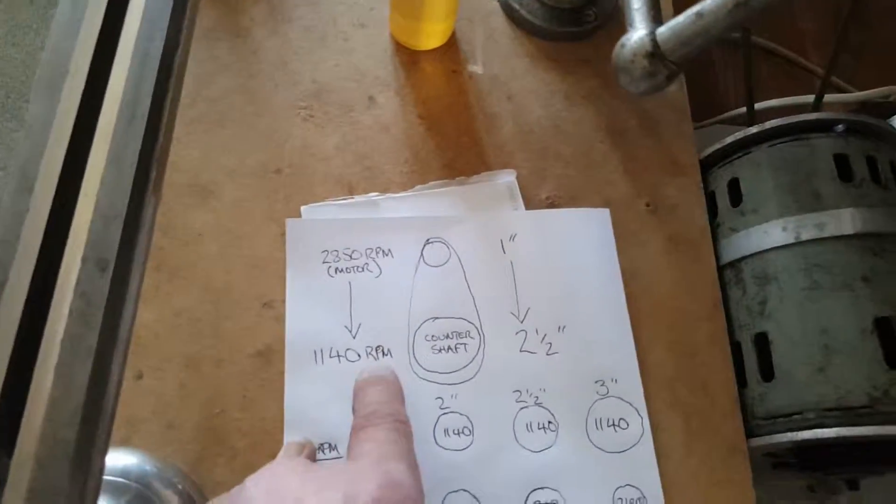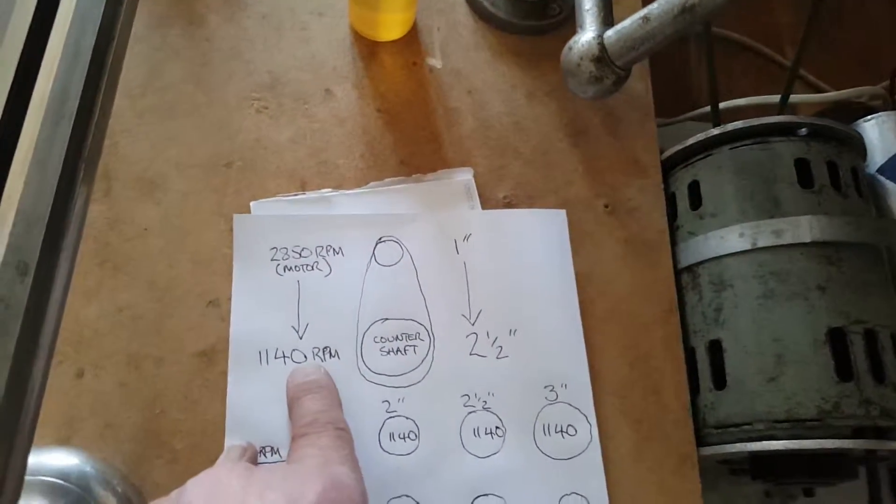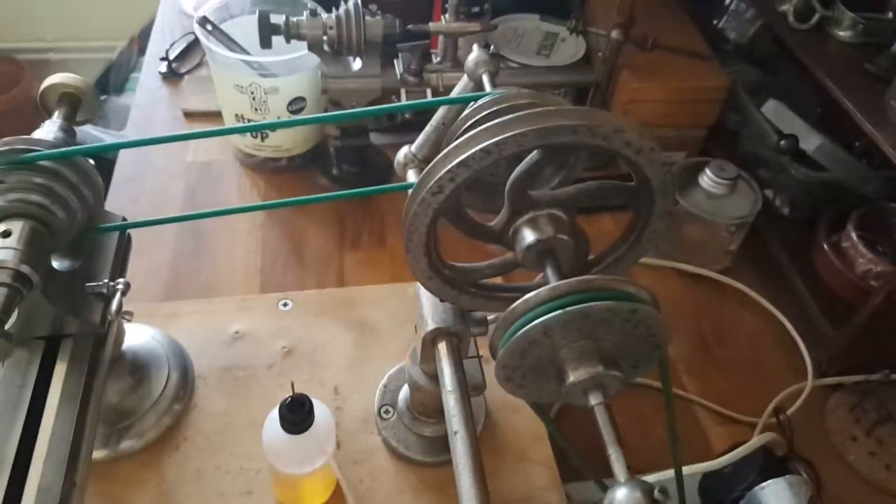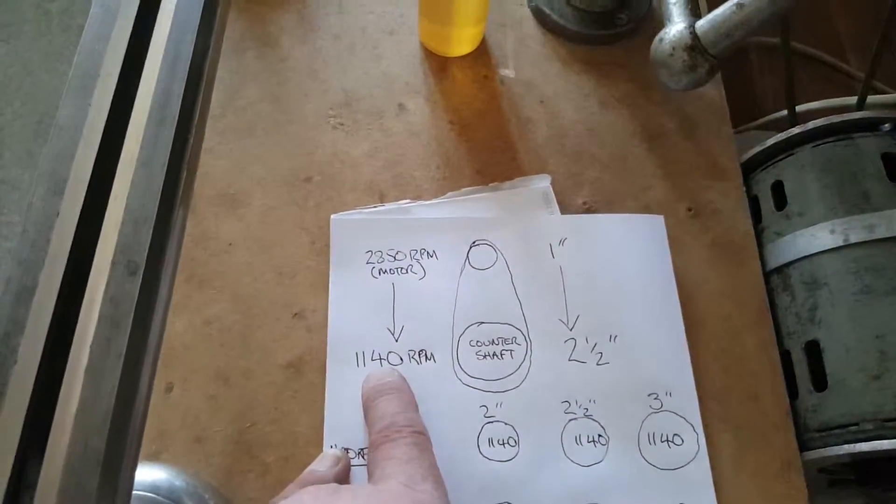So you've now got a speed of 1140 RPM which is a very workable speed when it comes to using on lathes. I will turn between 800, 1500, 2000 RPM. So being able to control the speed without reducing any torque.